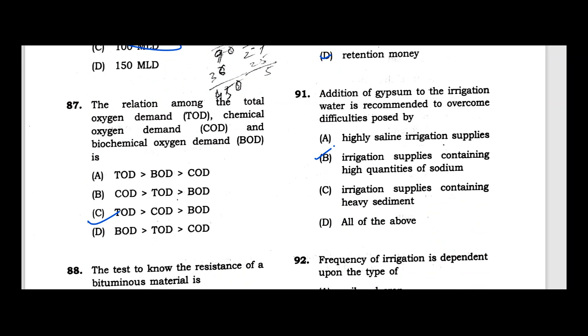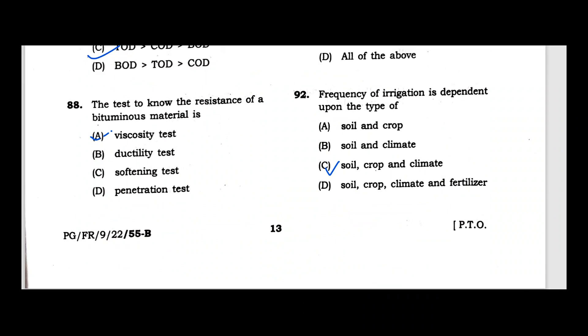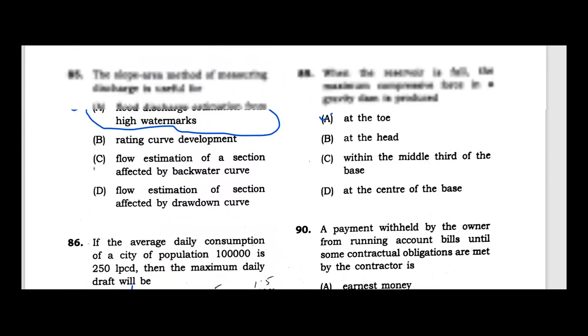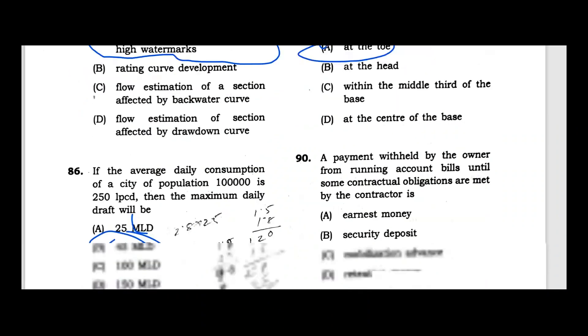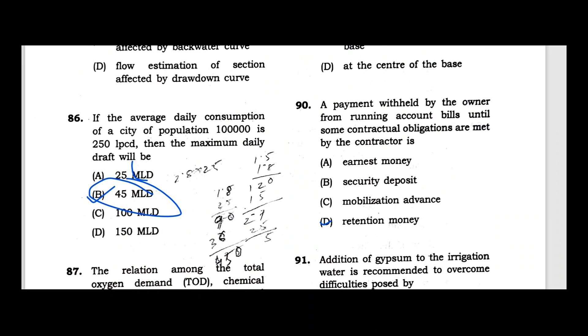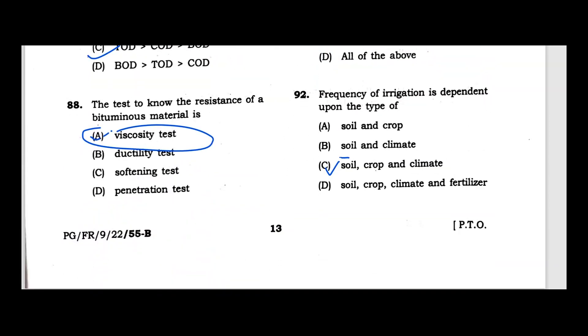Question 88: The relationship among total oxygen demand, chemical oxygen demand, and biochemical oxygen demand is that total oxygen demand is greater than COD which is greater than BOD. Question 89: The test which measures resistance of a bituminous material is viscosity test. Question 90: When the reservoir is full, the maximum compressive force in a gravity dam occurs at the base. Question 91: Payment withheld by the owner from running account bills until contract obligations are met is retention money. Question 92: Addition of gypsum to irrigation water is recommended to overcome difficulties from high sodium content. Question 93: Frequency of irrigation is dependent upon type of soil, crop, and climate.